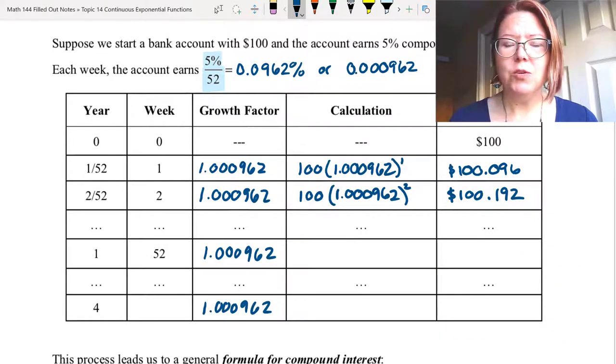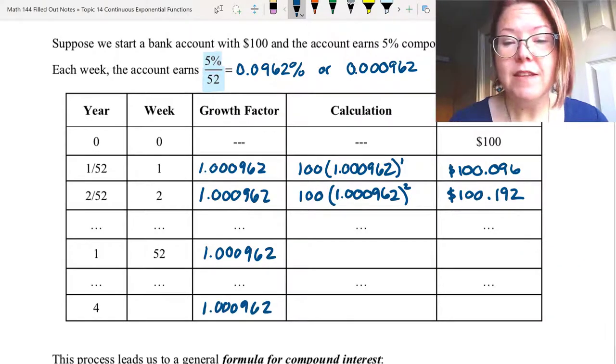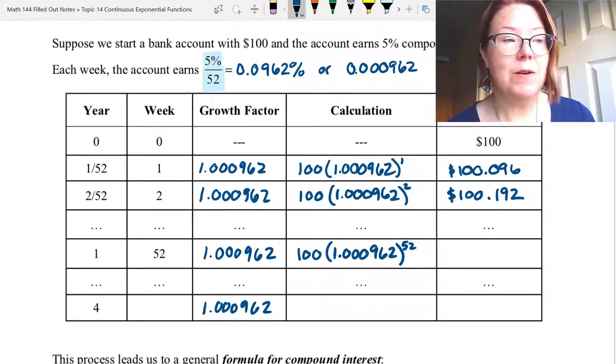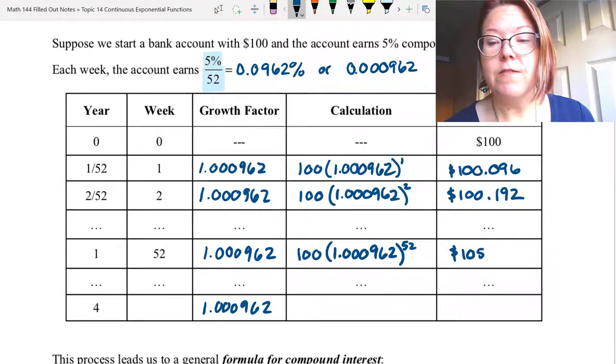Now we jump ahead to year one. That's week 52. The calculation here would be 100 times (1.000962), close the parentheses, put that to the 52nd power, and we have 105.127.